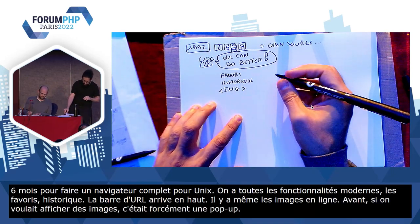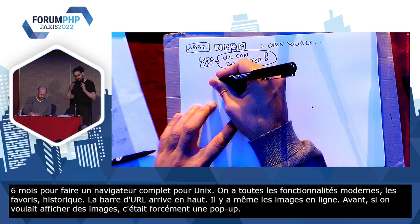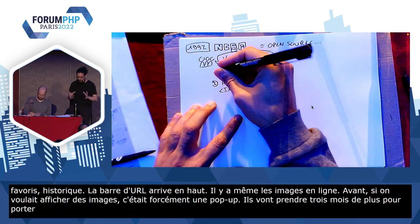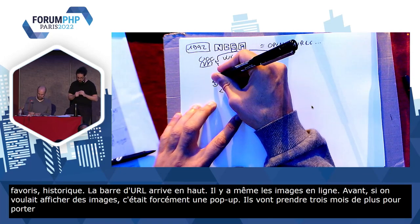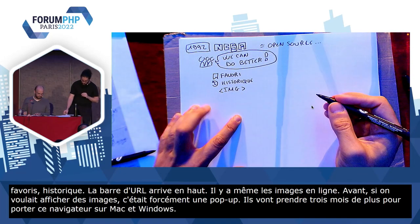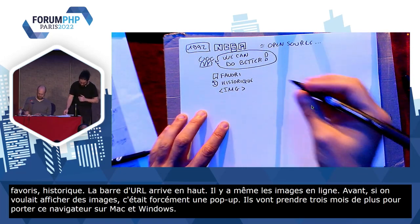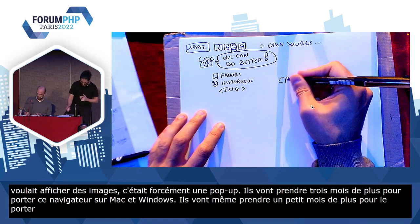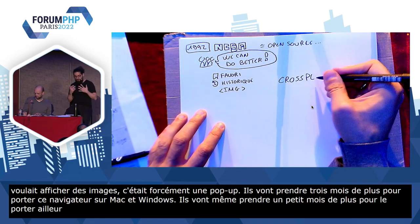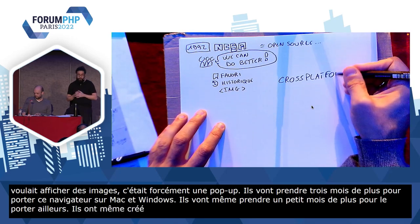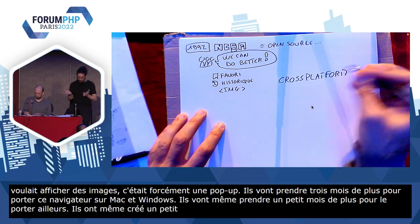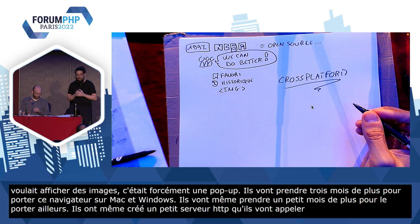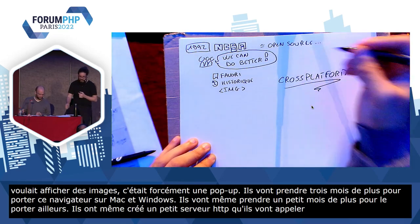Et donc, ils vont prendre trois mois de plus pour porter ce navigateur sur Mac et Windows. C'est le tout premier navigateur cross-platform. Ils vont même prendre un petit mois de plus pour le porter sur Commodore Amiga, parce qu'évidemment, c'était l'avenir de l'informatique. Ils ont même créé un petit serveur HTTP qu'ils ont appelé NCSA HTTPd — avec beaucoup d'imagination — et qui donnera naissance à Apache.